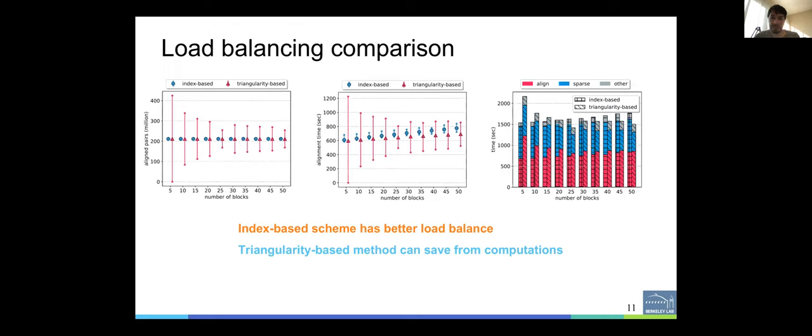Here you see the comparison of these two schemes. Here a line in the left plot and the middle plot, you see three points at each line, indicating the maximum, minimum, and the average obtained by the processors that are running in parallel. As you can see, the index-based method is able to attain better load balance than the triangular-based method for all tested block counts.